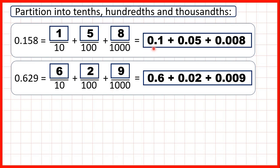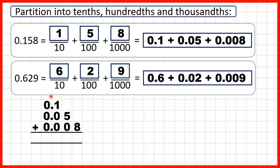We can also show the decimal partition as a column addition. So for 0.158 we had 0.1 plus 0.05 plus 0.008. We can write these numbers out with the decimal points lined up, because if the decimal points are lined up then the other place values — the ones, tenths, hundredths and thousandths columns — will be lined up as well. When we're adding decimals we can write zeros in empty squares, because 0.100 is the same as 0.1.